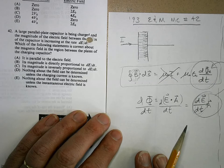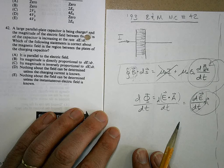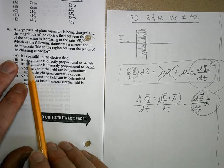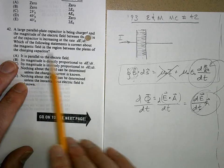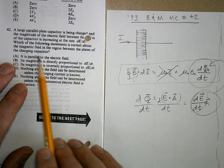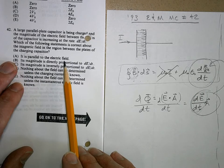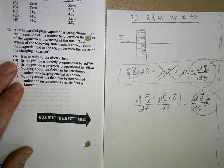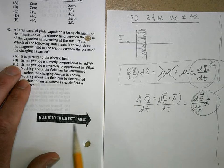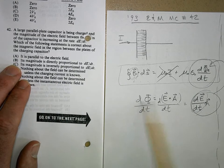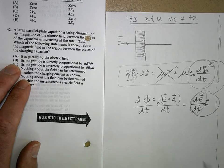Therefore, if we look at the answers, the options that we have, which of the following statements is correct about the magnetic field in the region between the plates of the charging capacitor? Option A says it is parallel to the electric field. Is an induced magnetic field ever parallel? No, it's perpendicular. So A is just wrong. B: its magnitude is directly proportional to dE/dt, and that's what I just showed right there. So B is the correct answer.